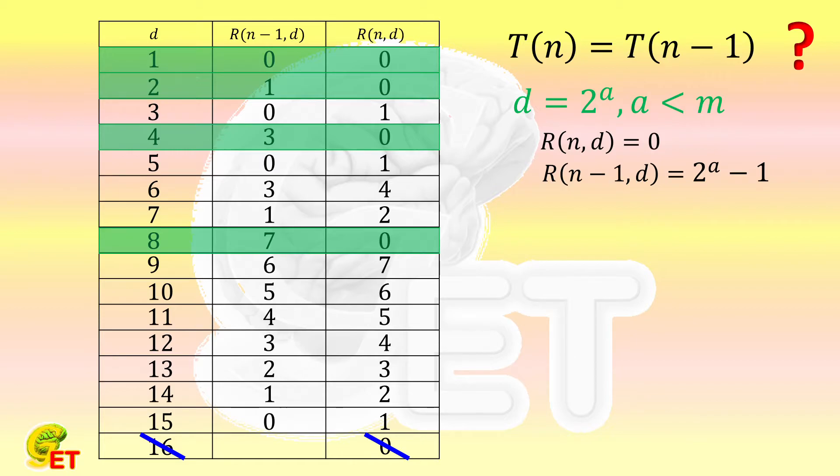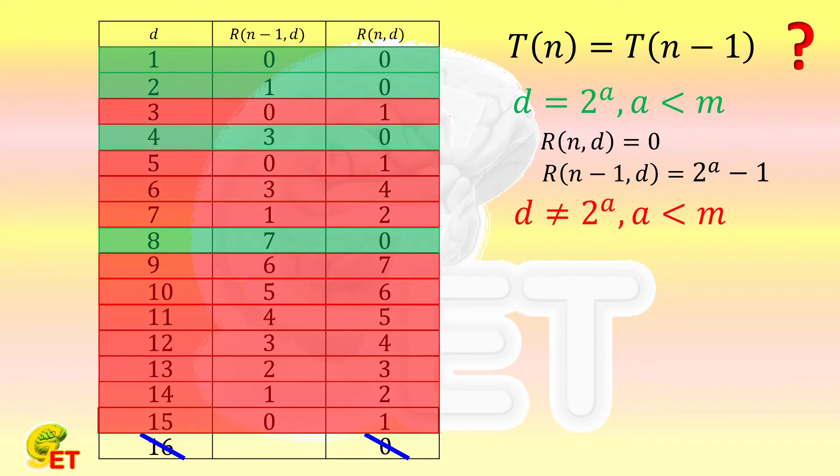The other case is that d is not an integer power of 2. In this case, no matter how much R(n-1,d) is, R(n,d) is always bigger than R(n-1,d) by 1. Now, we divide both T(n) and T(n-1) into two parts, one part is called T0 and the other part is called T1.